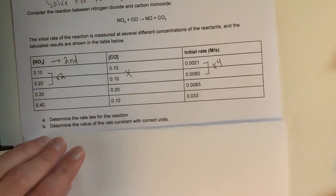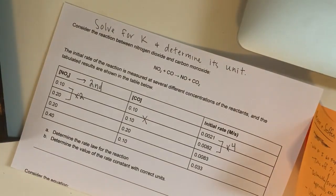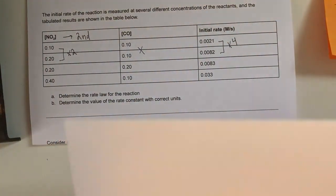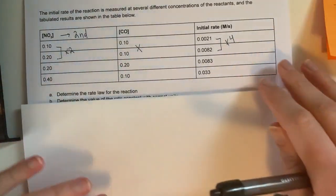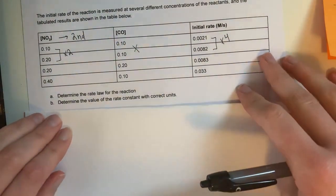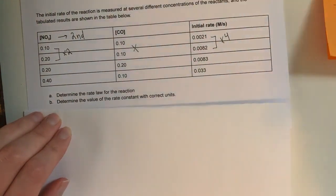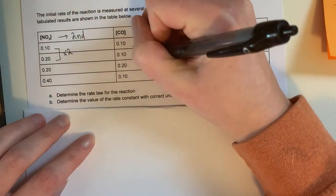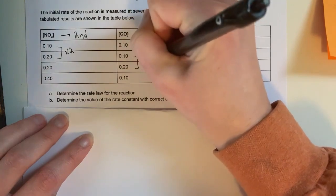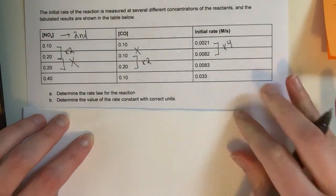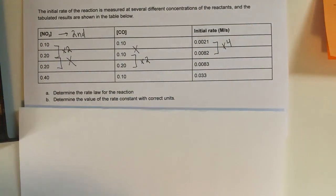Now I want to figure out the order with CO. So we want to look at CO next, and I look at these trials here, and I see that my concentration has doubled, and this concentration has stayed the same. So therefore, trials 2 and 3 would be good to look at for this experiment.